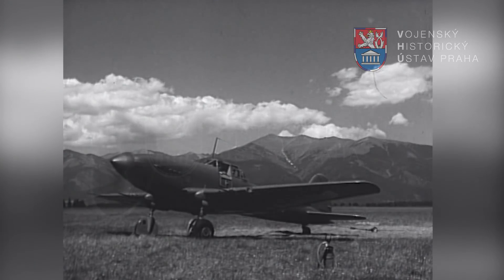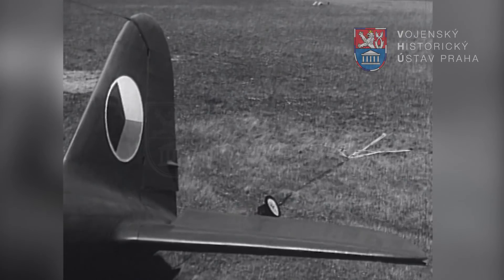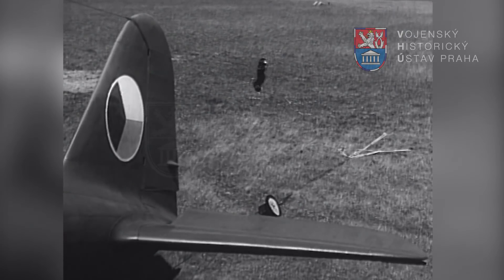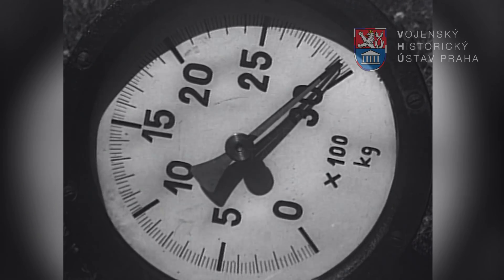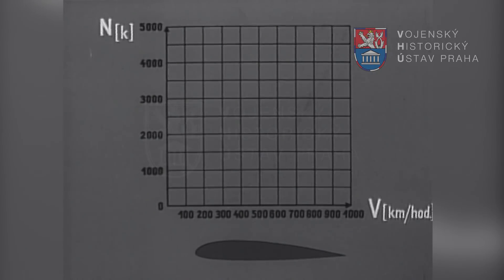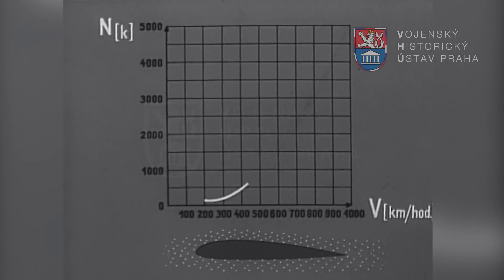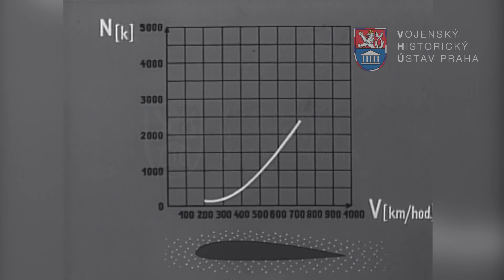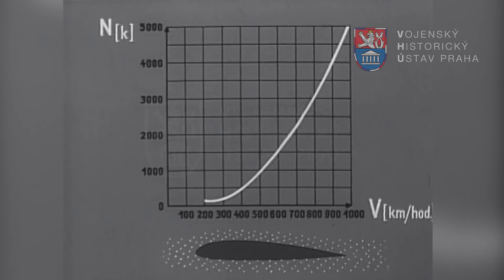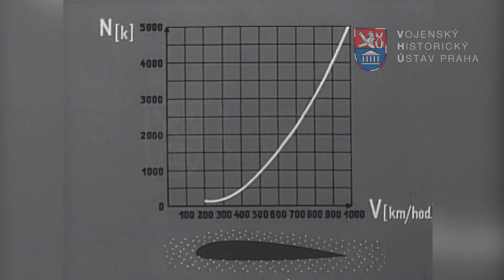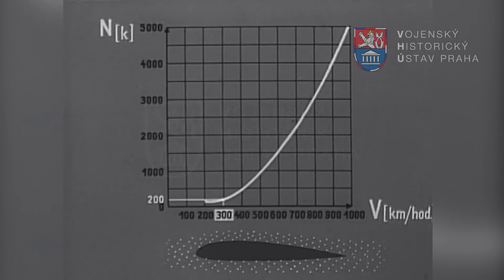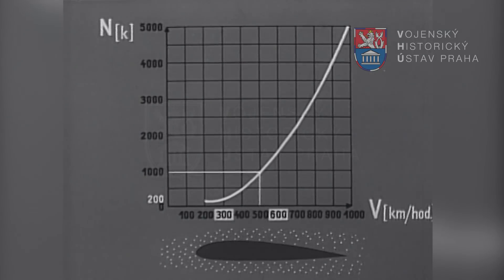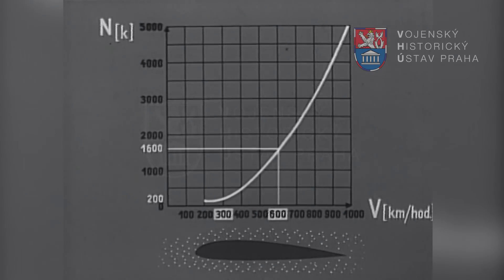Zvýšením tahu se zvětšuje i rychlost letounu, vzrůstá však také potřebný výkon motoru. Překážkou k dosažení velkých rychlostí je odpor způsobený vzduchovým prostředím. Výkon potřebný k překonání čelného odporu je přímo úměrný třetí mocnině rychlosti letu. To znamená, že chceme-li zvýšit rychlost letu dvakrát, musíme osmkrát zvýšit výkon motoru.